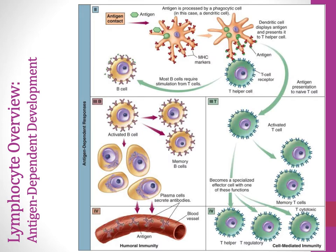Once activated, the T cell makes copies of itself. Some of those cells become memory cells, some become helper cells that help stimulate B cells, and we can also have T regulatory cells and cytotoxic T cells. All these different types of T cells play into cell-mediated immunity.